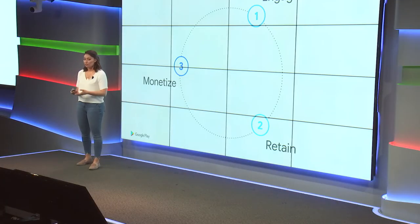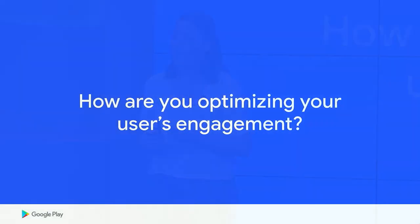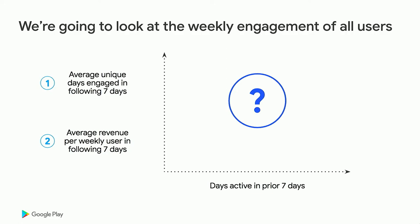Now that we've covered the relationship between first day engagement and the user lifecycle, let's look beyond the first day — specifically at the relationship for all users to understand why optimizing engagement is crucial to both future monetization and future engagement. We're going to look at users' engagement over a seven-day period, broken into buckets based on the count of unique days they were active. We'll compare this to engagement in the following seven-day period and to monetization per user in that same following period, helping us understand how optimizing your DAU/WAU ratio can impact both future monetization and future engagement.